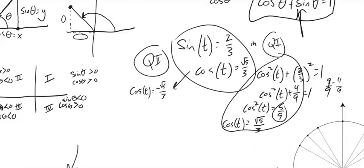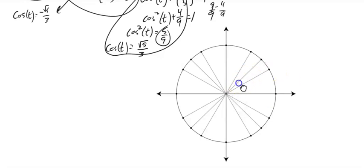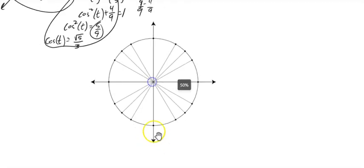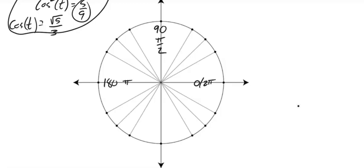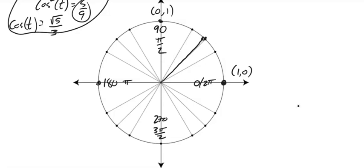Now let's actually build the unit circle. Here it is. Let me get the angles on here. This is 0 degrees, which is the same as 2π. This is 90 degrees, which is π/2. This is 180, which is π. 270, which is 3π/2. Since this is the unit circle, this distance is 1, so the cardinal points are (1,0), (0,1), (-1,0), and (0,-1).